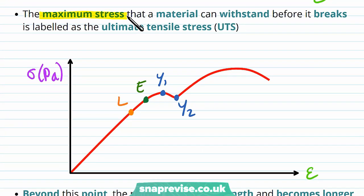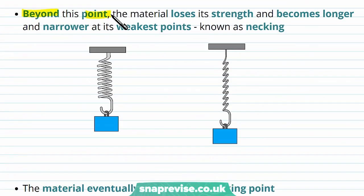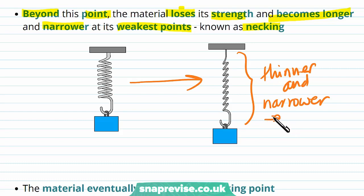The maximum stress a material can withstand before it breaks is labelled the ultimate tensile stress, UTS. It is the point on the graph where we have the greatest stress — the top of the curve. Beyond this point the material loses its strength and becomes longer and narrower at its weakest points. This process is known as necking.